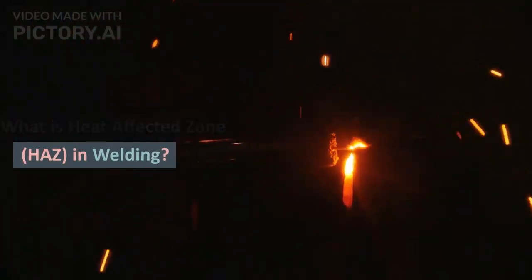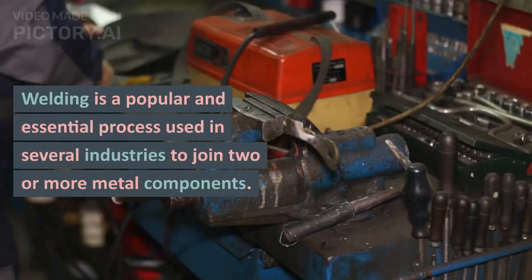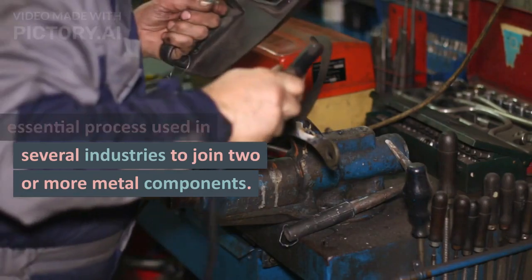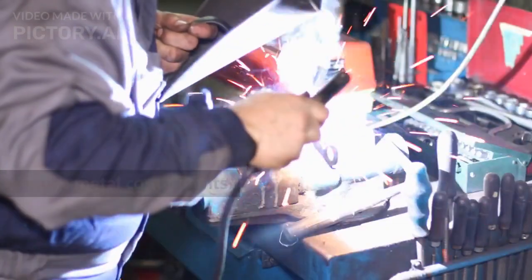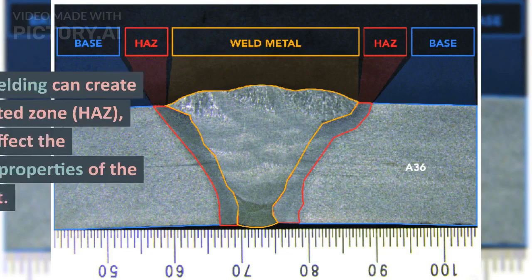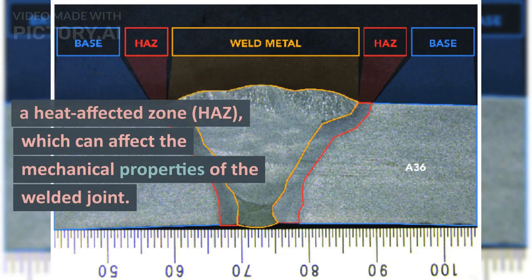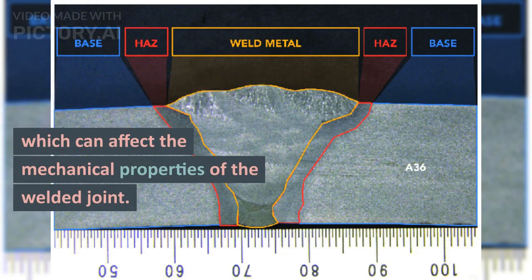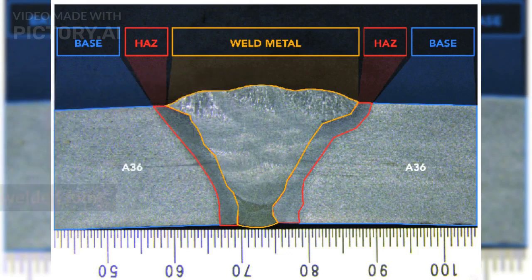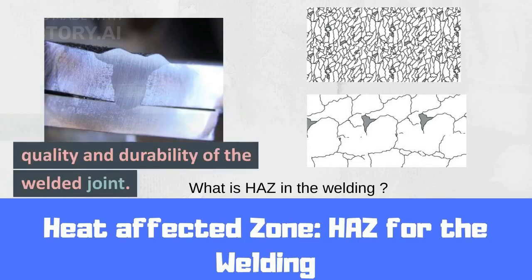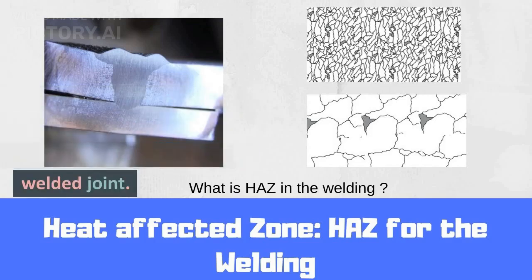What is heat-affected zone, HAZ, in welding? Welding is a popular and essential process used in several industries to join two or more metal components. However, welding can create a heat-affected zone, HAZ, which can affect the mechanical properties of the welded joint. Understanding HAZ is crucial in welding to ensure the quality and durability of the welded joint.